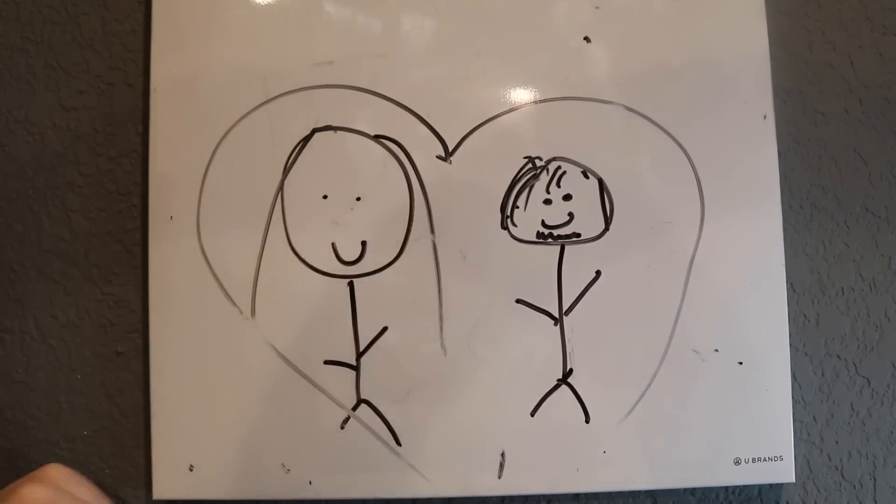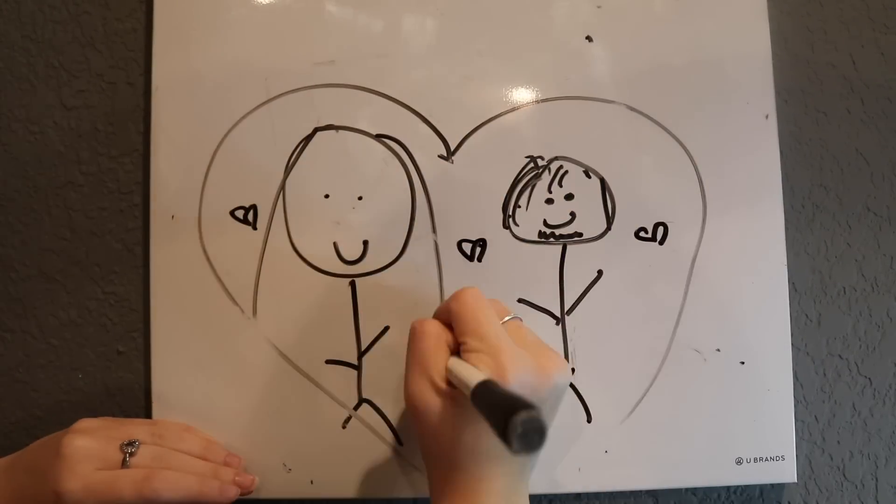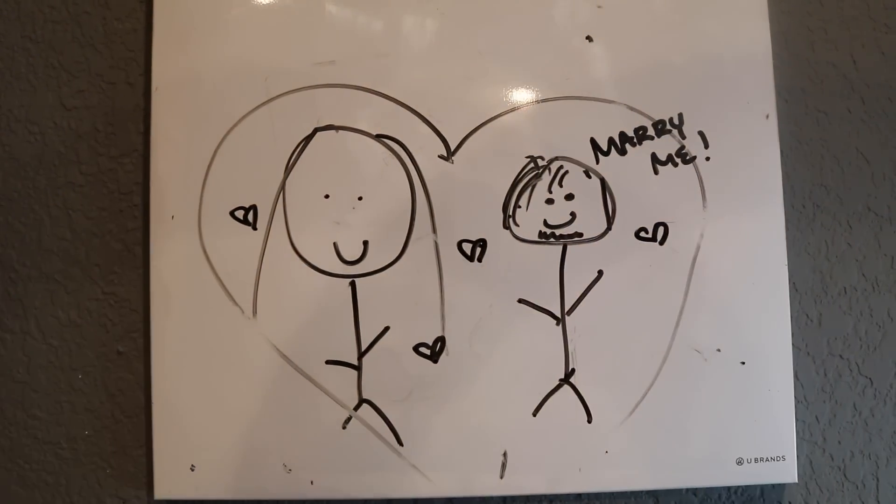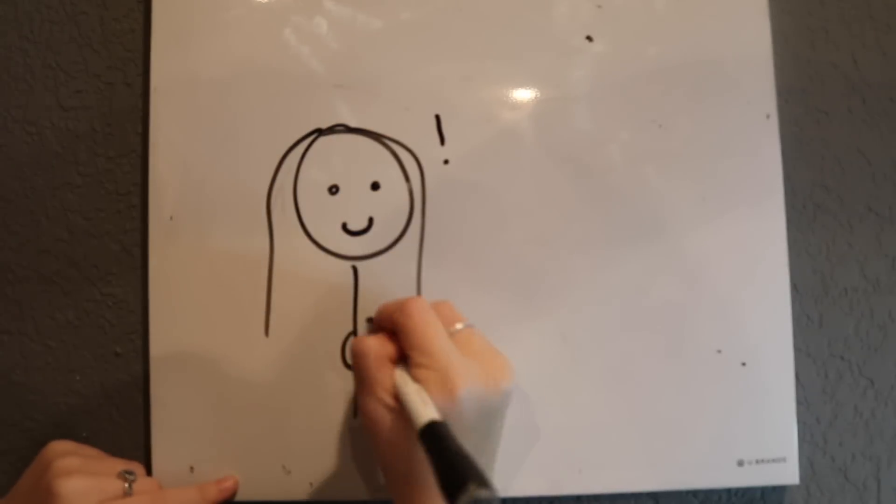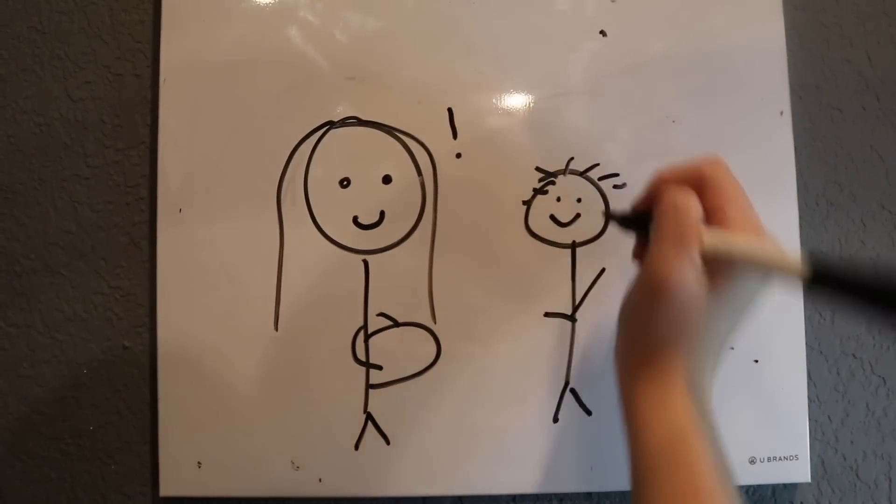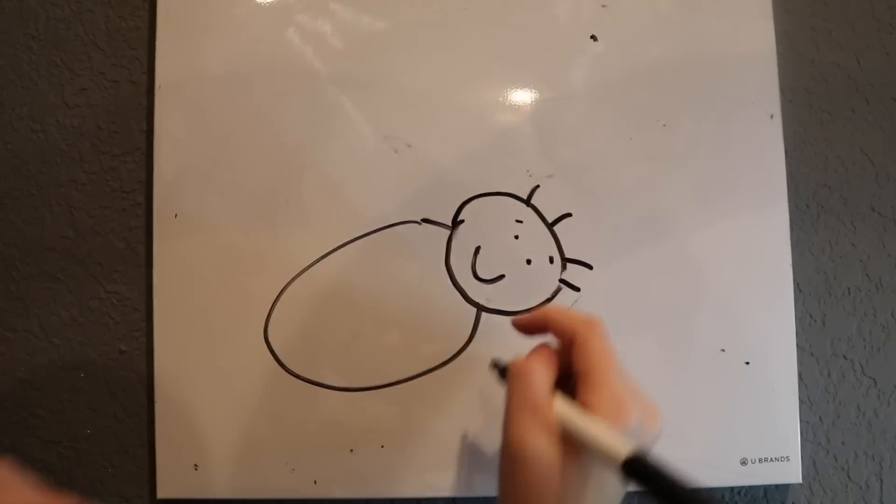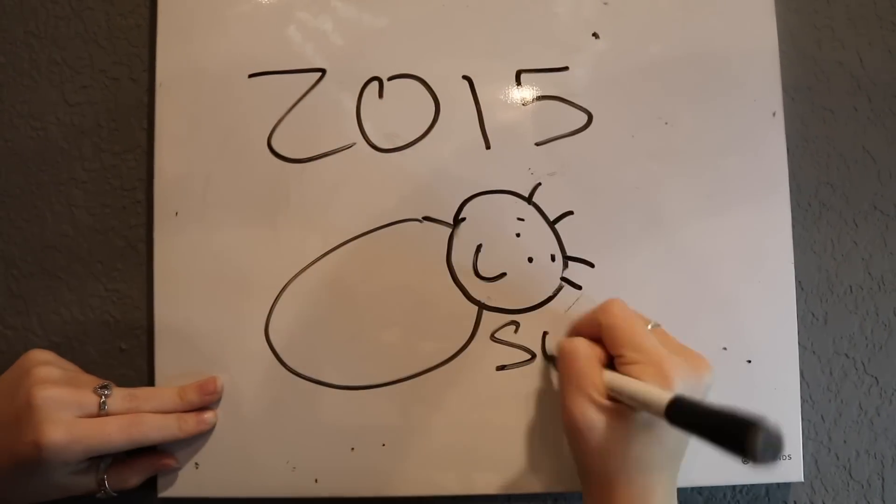The summer after they divorced, my mom started talking to her old friend, Sam. They had known each other since 3rd grade, and they fell in love. After only 8 months of dating, they got married. Sam didn't think he could have kids, but it turns out he could, because my mom got pregnant with my little brother, Slate. I was so excited to have another baby in the house.